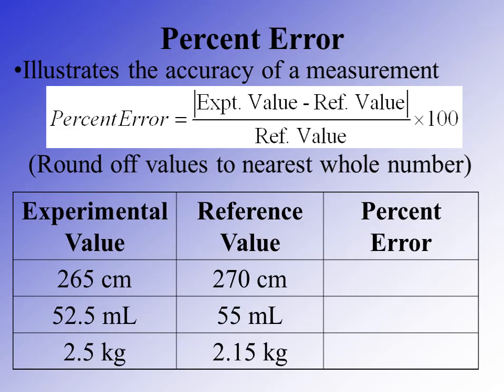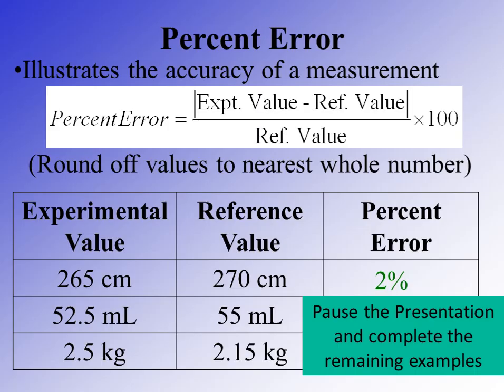Looking at some examples: in the first one, our experimental value is 265 centimeters and our reference value is 270 centimeters. Subtracting gives 5 centimeters. Dividing 5 by 270 and multiplying by 100 gives approximately 2% error. Take a moment now to pause the presentation, complete the remaining two examples, and when you're finished, resume the presentation to check your work.